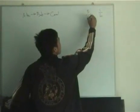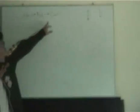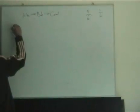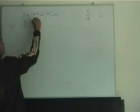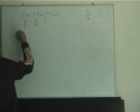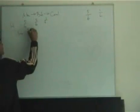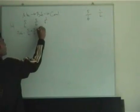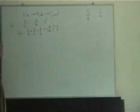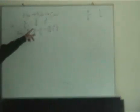We want to find the probability that Carol gets a six first. For Carol to get a six on the very first round, both Alice and Bob must throw a non-six, then Carol throws a six. That probability is (5/6) × (5/6) × (1/6), which equals (5/6)² × (1/6).